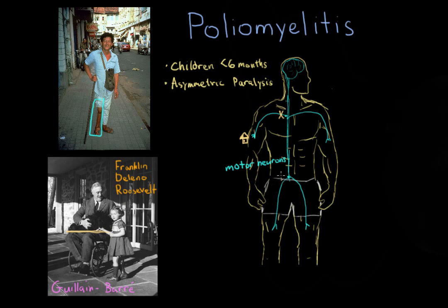The poliovirus might affect neurons on one side, but the neurons providing energy to the other leg may not be damaged — similar to what happened to the man with the cane, whose right leg is primarily affected. Franklin Delano Roosevelt had both legs affected, which is called symmetric paralysis. Guillain-Barré syndrome is known to cause this symmetric paralysis.